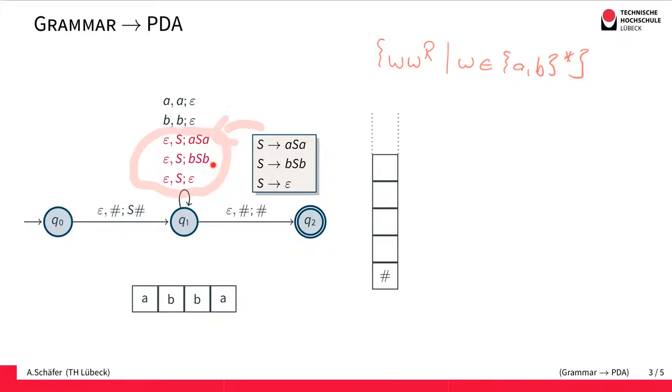And the very same for the two other productions. They are also directly copied, transformed into a transition rule. And this is actually the only dynamic part of this construction. We simply copy the production rules into transitions for the PDA.